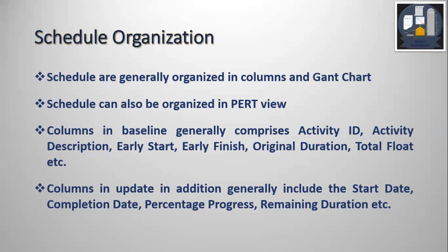For the update, there are some additional columns: start date, completion date — which may be the actual or forecasted start and completion — then percentage progress of each activity, and as the activity progresses, what is the remaining duration. These are the additional columns, and this also varies.